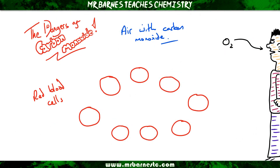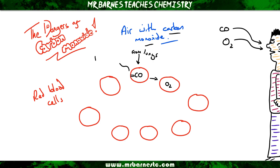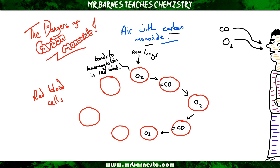When incomplete combustion occurs, carbon monoxide is produced. If you're in a room where there's carbon monoxide, you will breathe it in. The carbon monoxide will come from the lungs into the red blood just like oxygen does, but the problem is that carbon monoxide also binds to the haemoglobin in the blood. The oxygen that is already in there will lead to respiration, producing carbon dioxide and water.